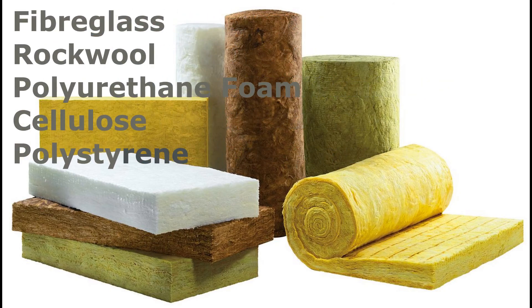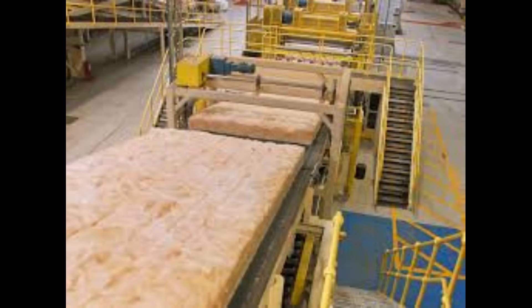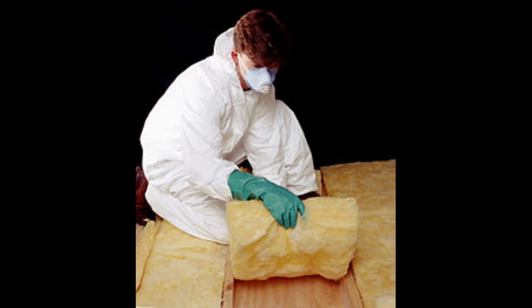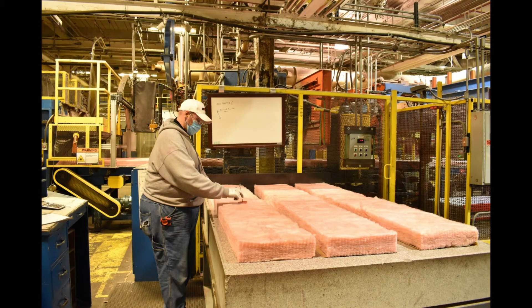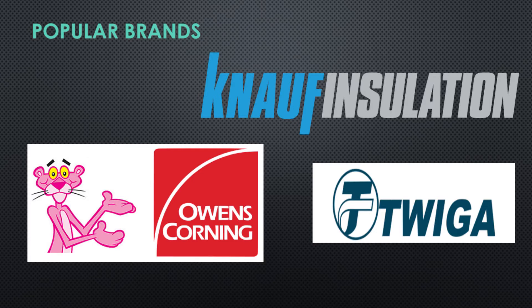The most common thermal insulation materials used in the construction industry are fiberglass insulation, rock wool insulation, polyurethane foam, cellulose insulation, and polystyrene or styrofoam. Fiberglass insulation is the most common type used globally, manufactured by weaving very fine strands of glass into insulation material. Since it is made from glass strands, handling can be a challenge as it is very sharp and can create cut wounds and damage organs like eyes and lungs, so always use proper PPE. It is non-flammable and gives an R-value of 3.8 per inch of thickness. Top brands include Owens Corning, Knauf, and Tiger Rock.